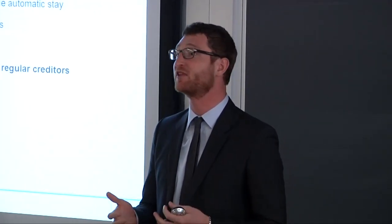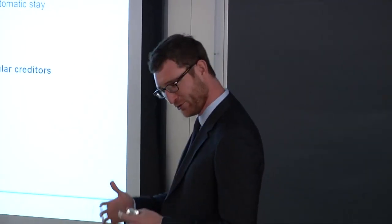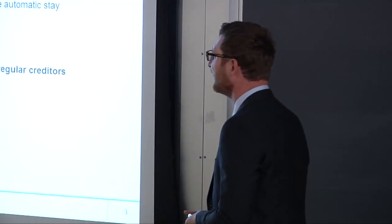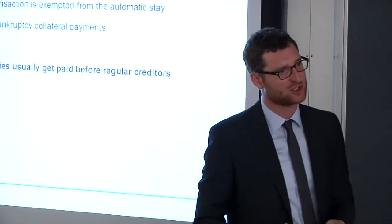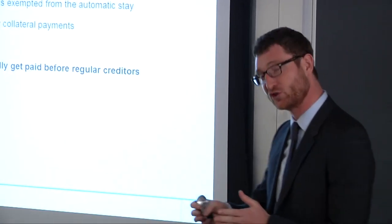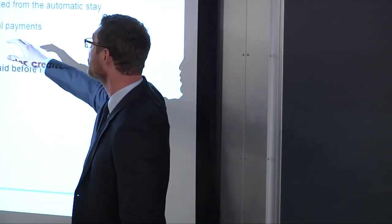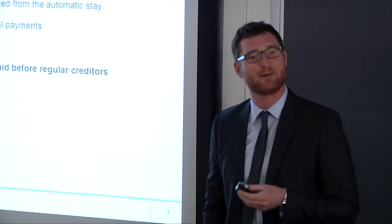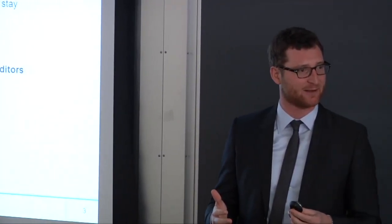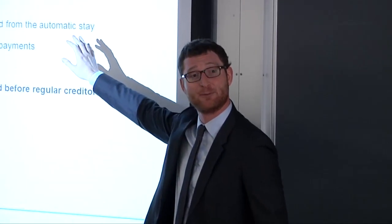Say three months ago my firm entered a derivative transaction — for example, something called a swap. This starts at a value of zero, then it fluctuates, and I as a firm might now owe you something — maybe $50,000 on the swap. Derivatives are usually collateralized with financial collateral. As I lose on a mark-to-market basis, I pay $50,000 into a collateral account. When I default, that collateral is not protected by the automatic stay. So while collateralized creditors can't just come and collect, the derivative counterparty can come and collect those $50,000.